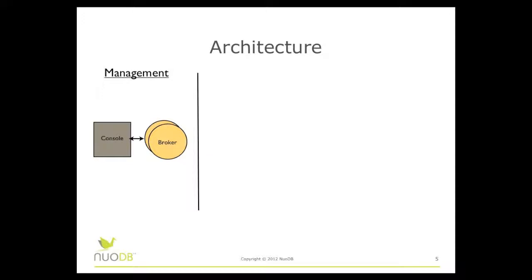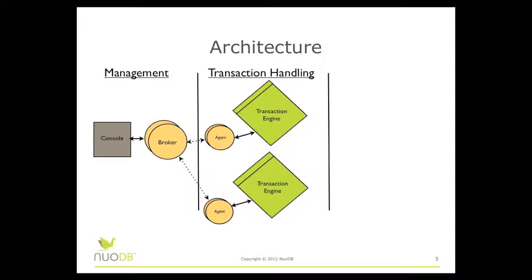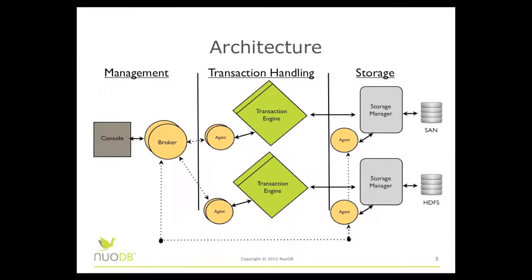If we look at a slightly more complex implementation, we see multiple broker processes running for failover, multiple transaction engines for failover and performance, and finally multiple storage managers — again for failover reasons. In this example, each storage manager is using a different data store: one is using a SAN while the other is using HDFS. It's important to understand that the data is the same in each storage manager regardless of the data store in use. Also, you see that there are multiple agents running in each tier — each transaction engine and storage manager running on separate hardware will have an individual agent process running by default.